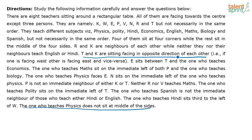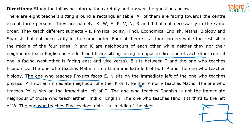Look at these two sentences: T and K are sitting facing opposite directions of each other. Now where do I place them — in the corners or the middle? The next thing to look for: the one who teaches physics does not sit in the middle of the sides, and the one who teaches physics faces E. And also: E sits between T and the one who teaches economics.